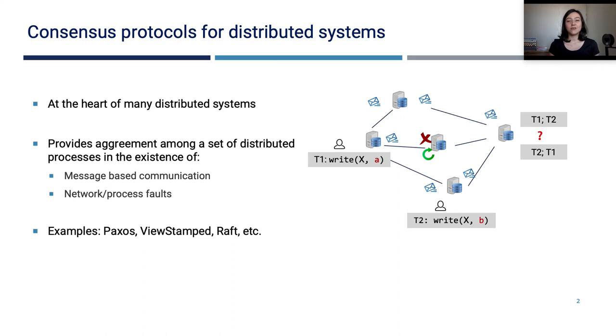Consensus is at the heart of many distributed systems. We have a set of distributed entities or nodes which are connected by network, and in order to cooperate, those nodes need to agree on some common subjects such as the course of action in response to a request or a total ordering of transactions. Consider the example here where there are two concurrent transactions submitted. One of them wants to write A to X and the other one wants to write B to X.